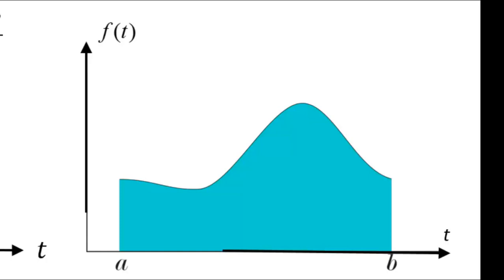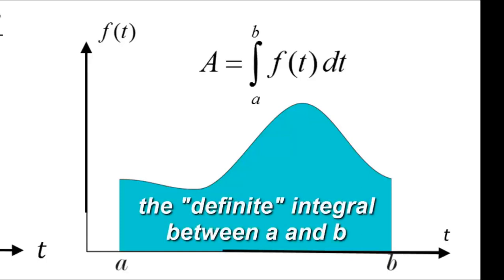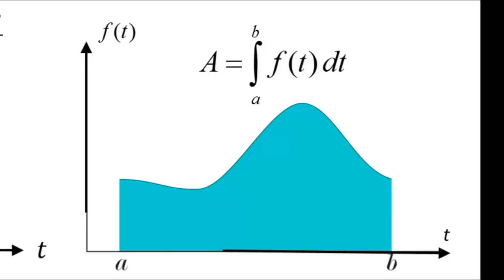The mathematical operation that gives us that area is called the integral of f, integral of f between a and b, between this a and that b. That is the area a under the curve between a and b.